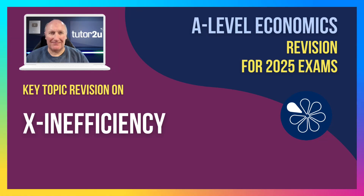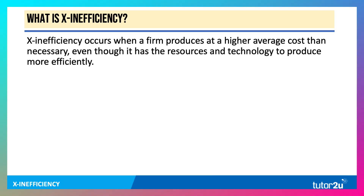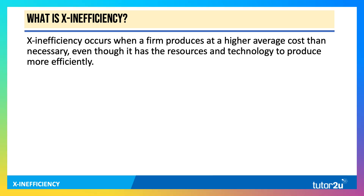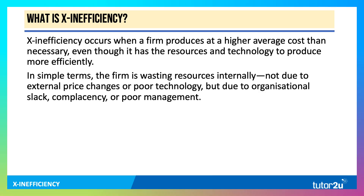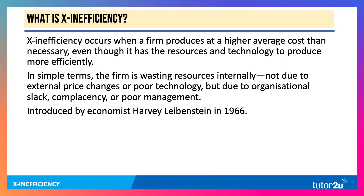In this video we're going to spend a few minutes looking at the concept of X-inefficiency. This happens when a firm produces at a higher unit or average cost than necessary, even though it has the factor resources and the technology available to produce more efficiently. In simple terms, the firm is wasting resources internally, often due to organisational slack, complacency, and/or poor management.